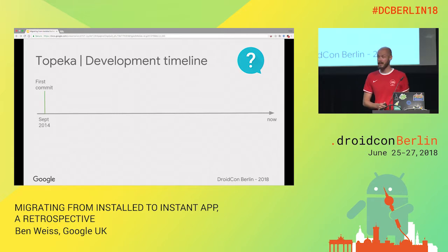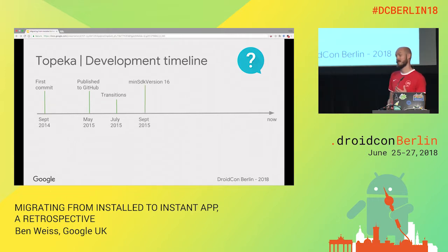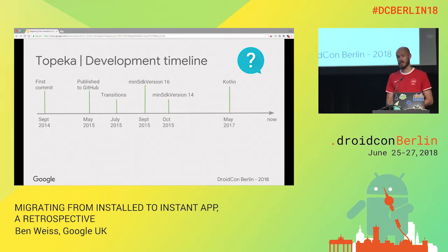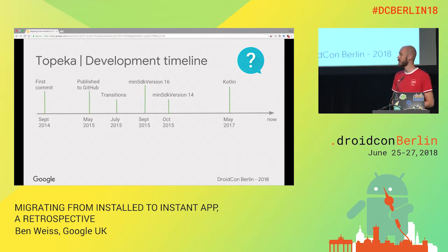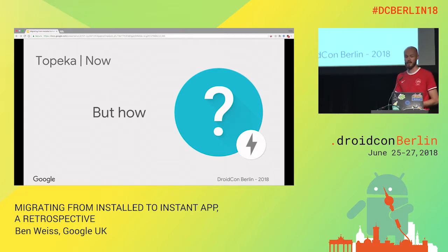I started in 2014, then published it to GitHub in May 2015, then added the Transitions API, lowered the min SDK level from 21 to 16 and then down to 14 — so it's available on virtually all Android devices. Then last year, I published a version completely rewritten in Kotlin, so you can take a look at that as well. And now it's available as an Instant App. But how did I do that? That's what we're going to focus on.